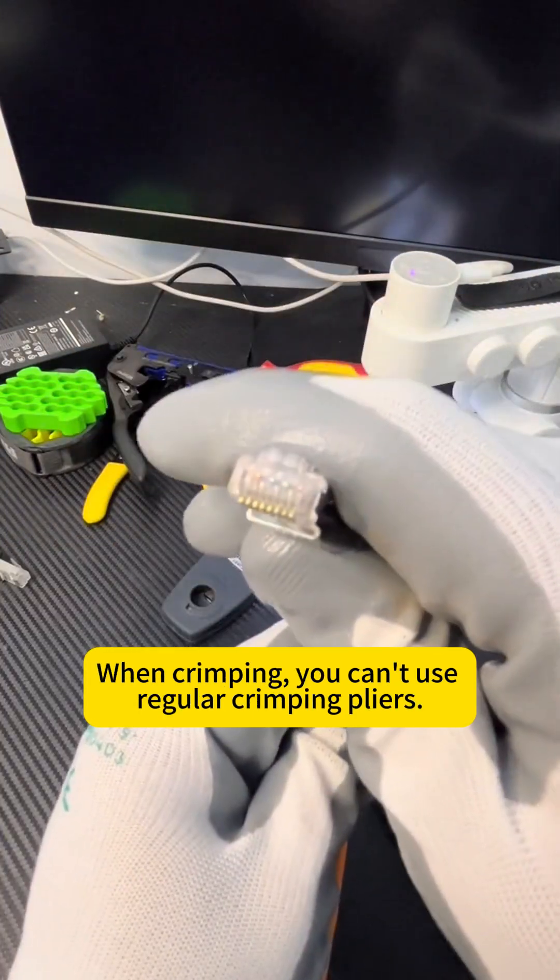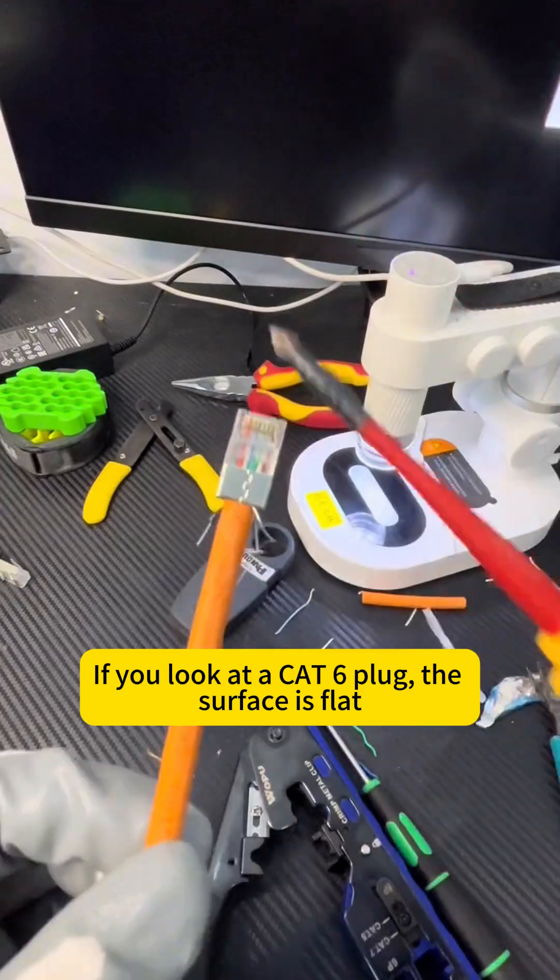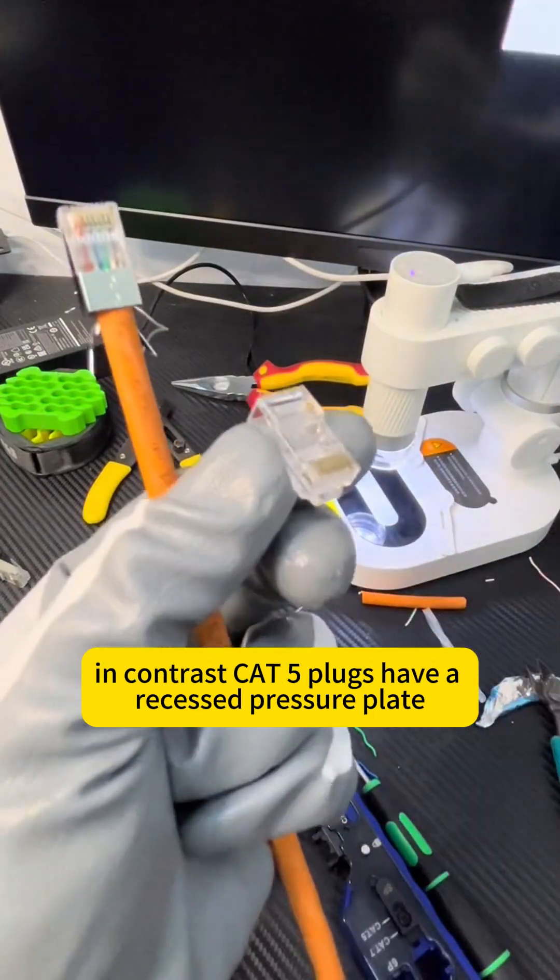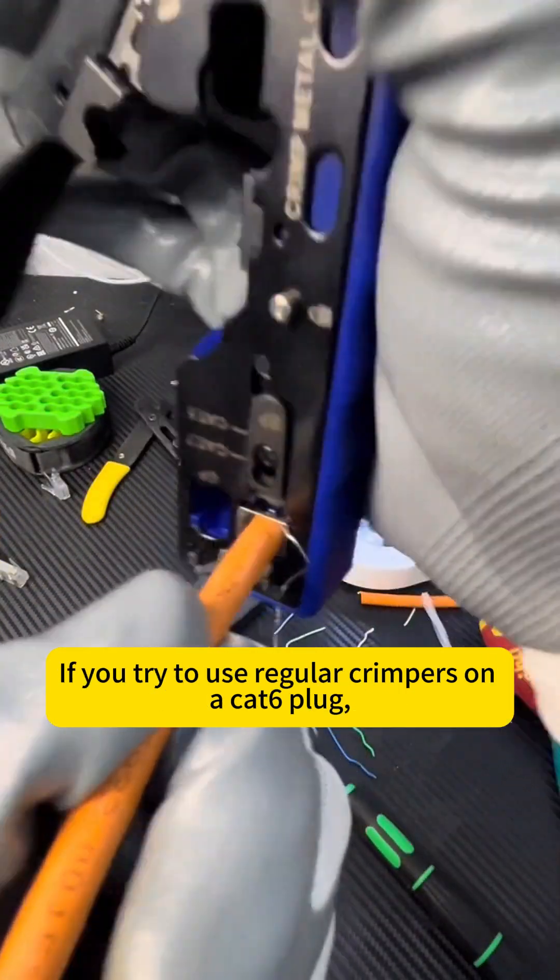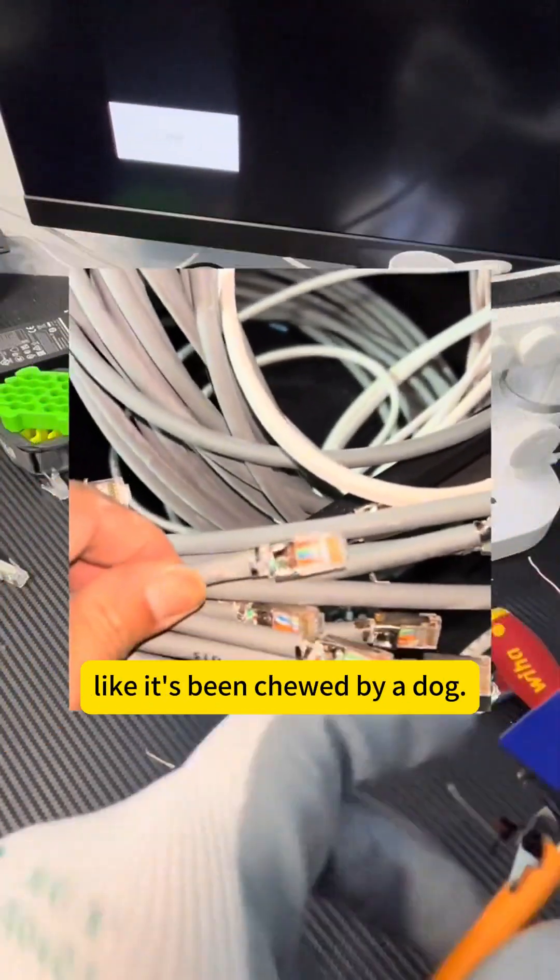When crimping, you can't use regular crimping pliers. If you look at a CAT6 plug, the surface is flat. In contrast, CAT5 plugs have a recessed pressure plate, which regular crimping pliers are designed to press in. If you try to use regular crimpers on a CAT6 plug, the result will be messy, like it's been chewed by a dog.